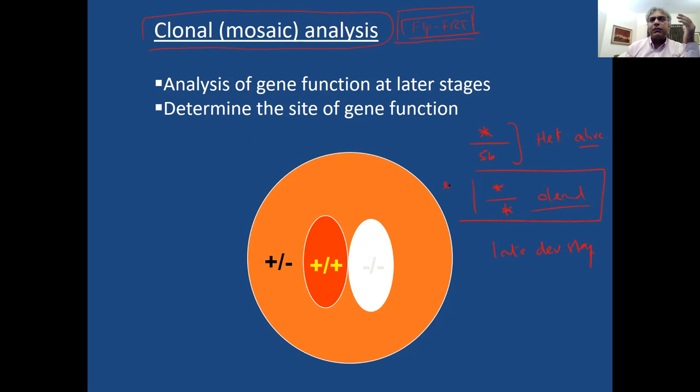This is embryonic lethal, let's say. Embryonic lethal means homozygous dies at the embryonic stage. If you have to study, you say, I'm interested in studying development of wing. Role of this particular gene in development of wing or eyes. So people relied on this FLIP FRT system.